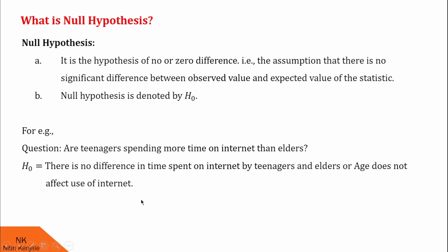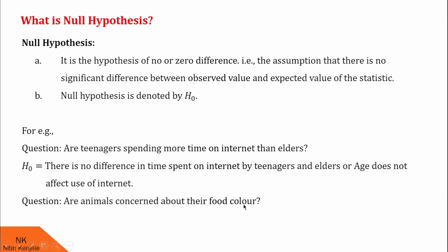Let me give you another example. Assume your question is: are animals concerned about their food color? Then you should decide your H0, that is null hypothesis, as: animals do not concern about their food color. That means there is no difference.